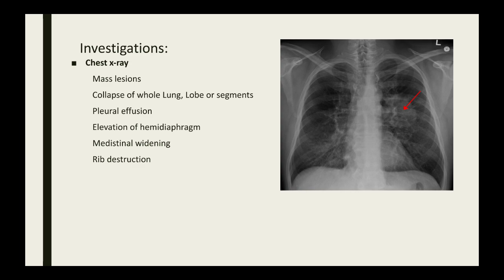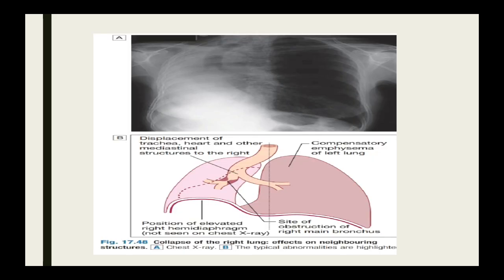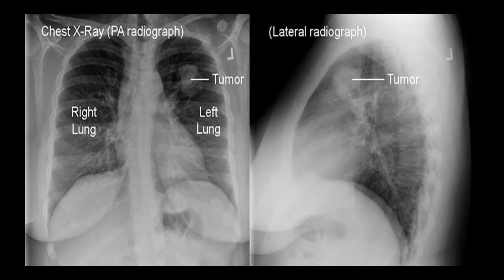Coming to the investigations, chest X-ray is very important. On PA view, it can show a mass lesion, collapse of the whole lung, lobe, or segments. There can be pleural effusion, elevation of the hemidiaphragm, and mediastinal widening. Invasion into the chest wall structures can show rib destruction. This chest X-ray shows mediastinal shift to the right, with the trachea shifted to the right and elevation of the diaphragm. On the left, the lung appears emphysematous. This other X-ray shows a tumor in the left lung — the first image is the PA view and the second is the lateral view.